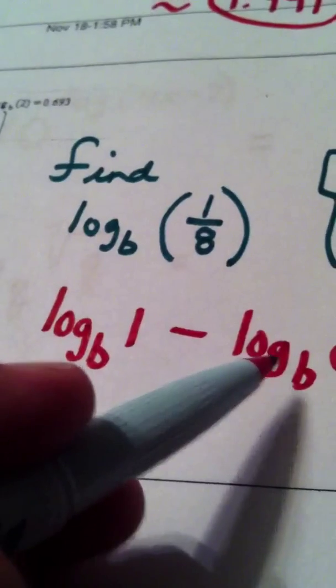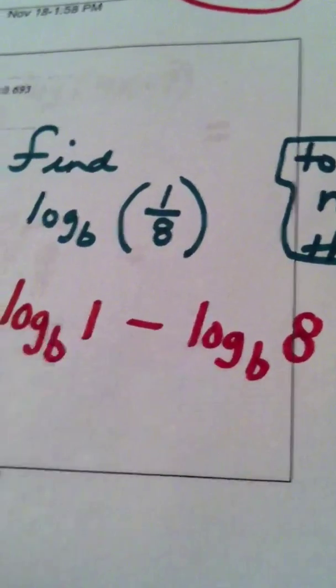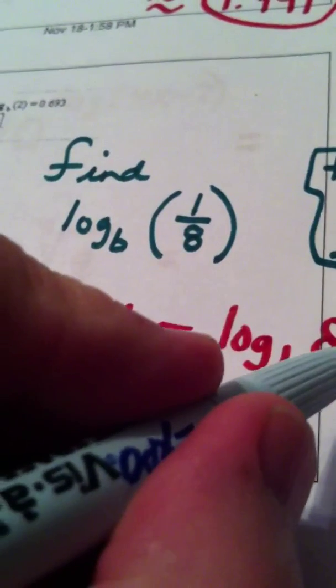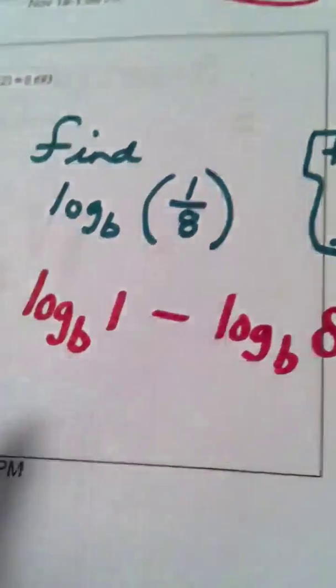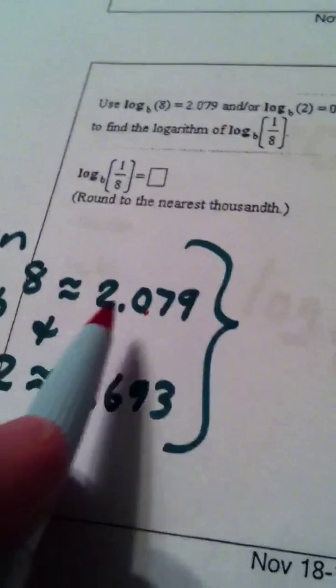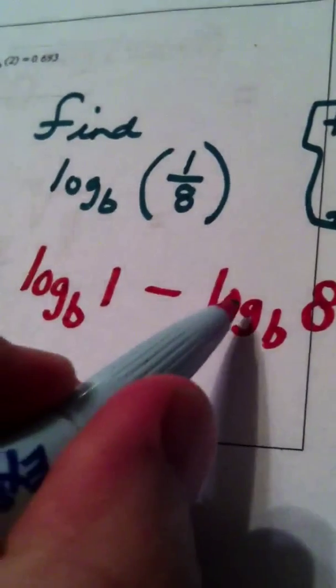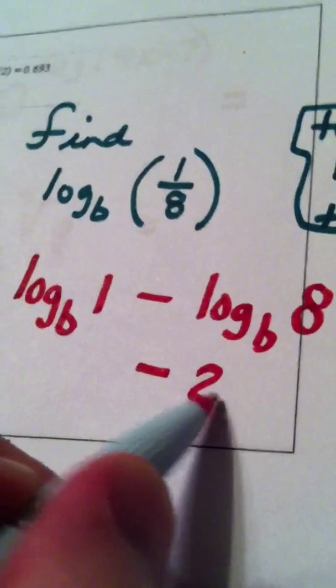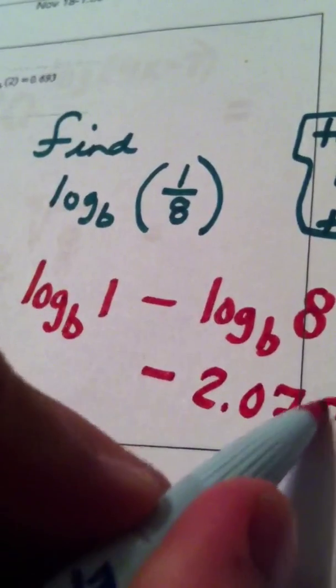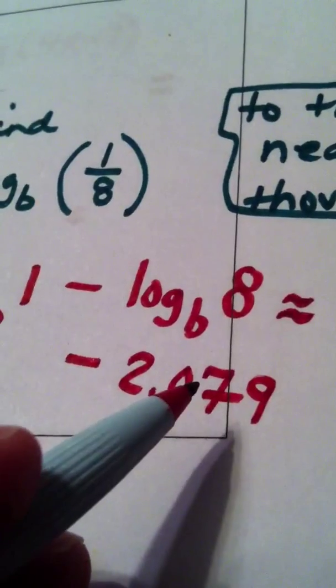Now, log base b of 8 they already gave me approximately. So approximately they gave me that the log base b of 8 was 2.079. So I know this part is approximately 2.079. That was given.